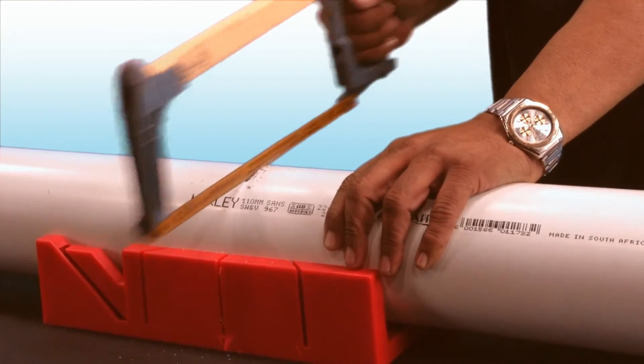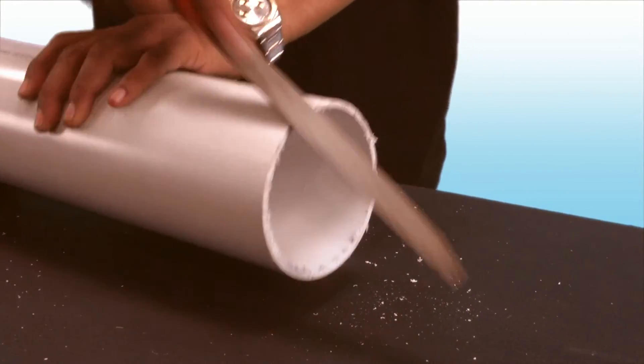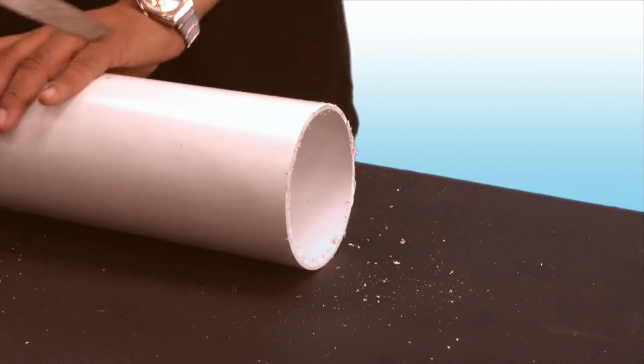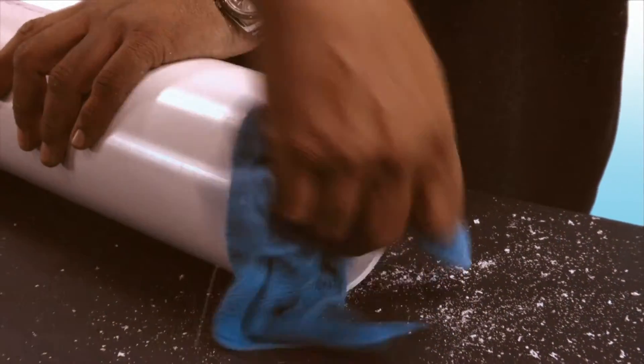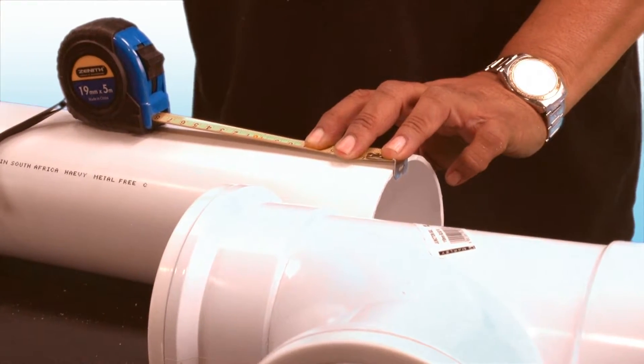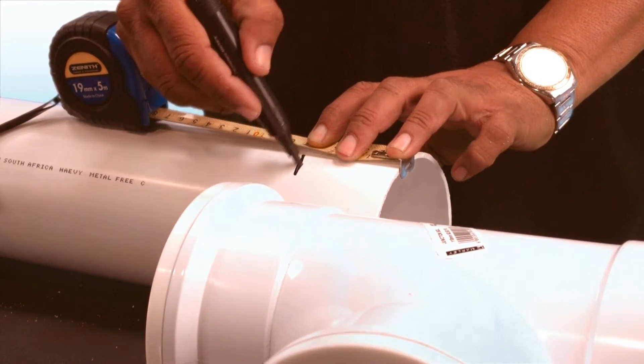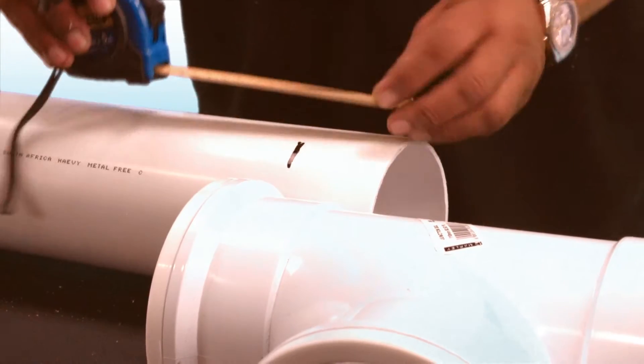Cut the pipe as previously mentioned, chamfering the ends and removing all swarf and dirt. Like with the underground fittings, measure and mark the insertion depth.